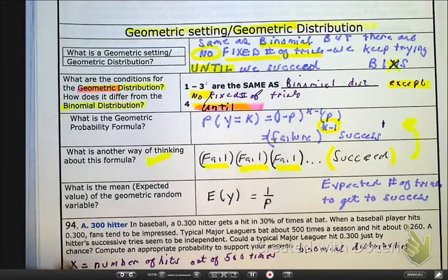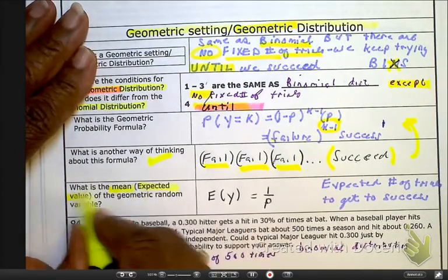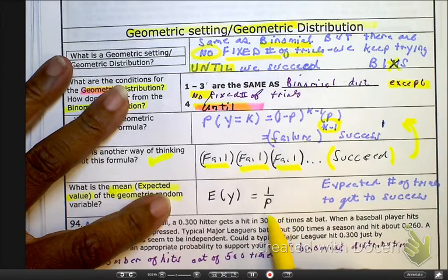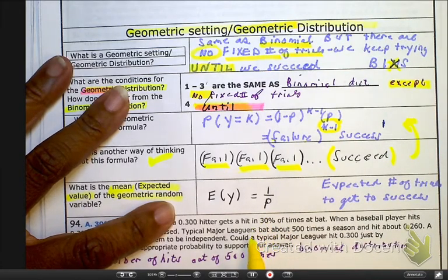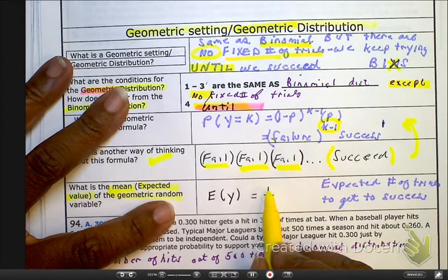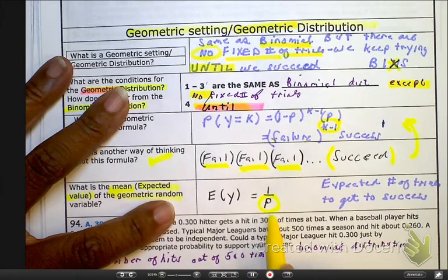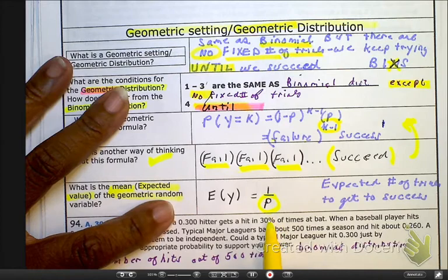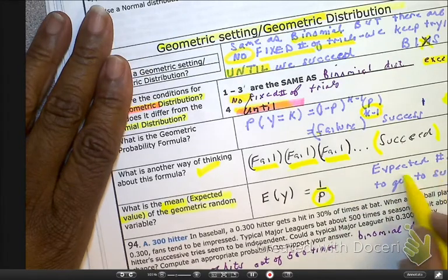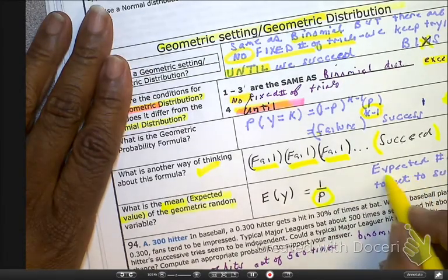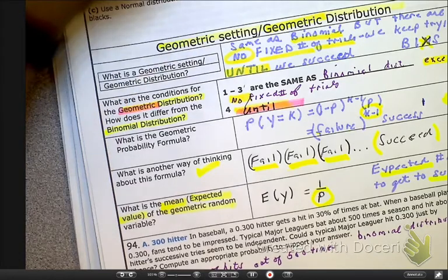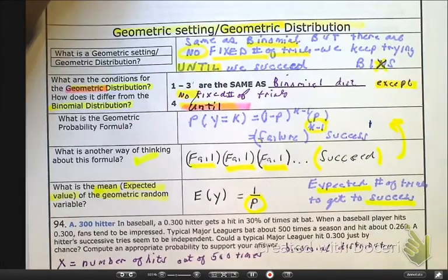The next question is, how do we find the mean or the expected value of that geometric random variable? Well, it's going to be one divided by the probability of success. So you have what's equivalent to a 100% chance, but it's only going to happen that percentage of the time. That's the way I look at this formula. And this is going to give us the expected number it's going to take to succeed in a geometric distribution.